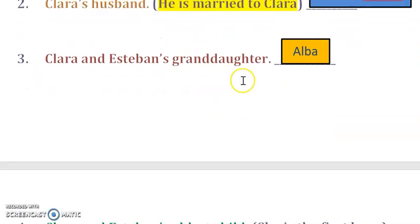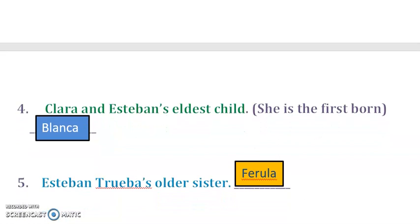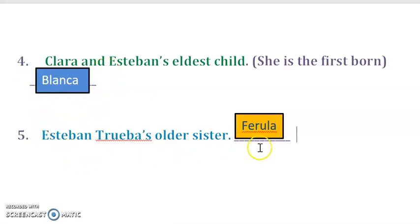Number three: Clara and Esteban's granddaughter — who is she? It's Alba, A-L-B-A. Number four: Clara and Esteban's eldest child — she is the firstborn, and it's Blanca. And lastly, Esteban Truba's older sister is Ferula.